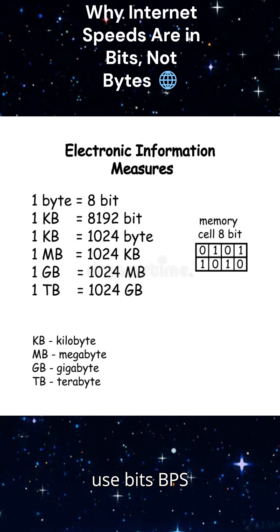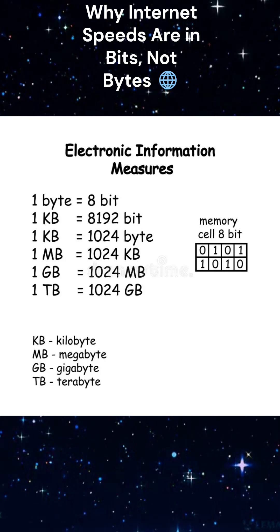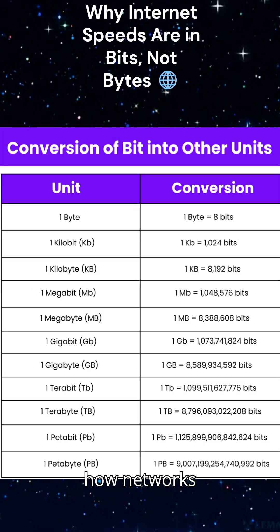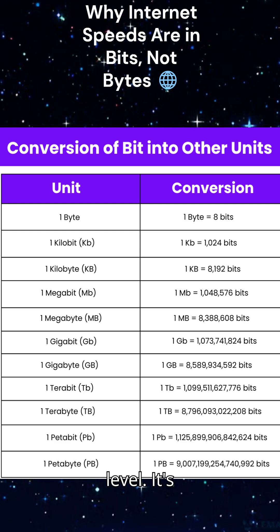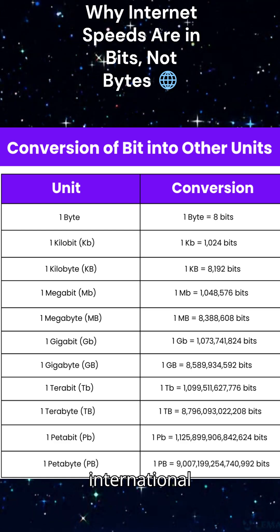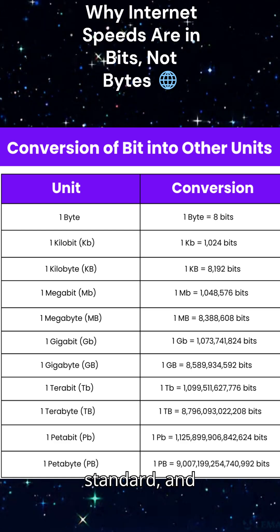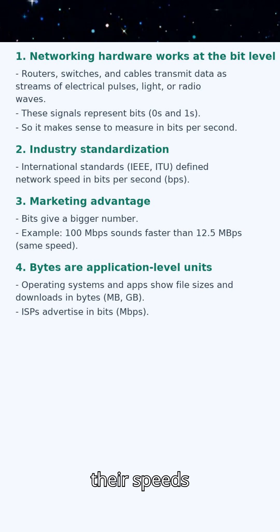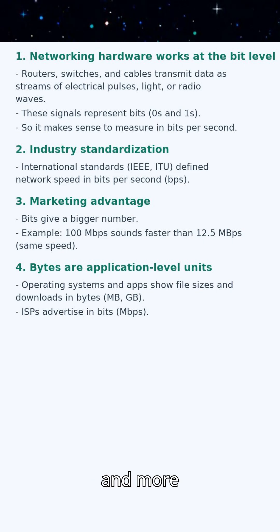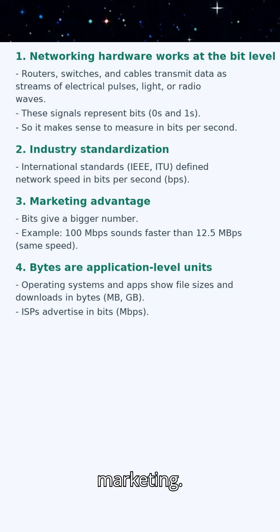In short, ISPs use bits (bps) because that's how networks transmit data at the hardware level. It's also the international standard, and it makes their speeds look bigger and more attractive in marketing.